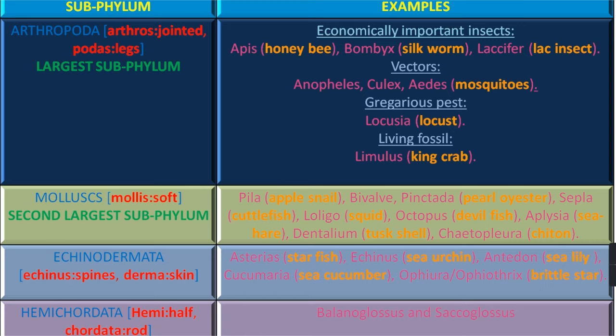Now, Echinodermata — where Echinus means Spines and Derma means Skin, that is these animals have spines on their skin. Examples are Asterias (Starfish), Echinus (Sea Urchin), Antedon as Sea Lily, Cucumaria (Sea Cucumber), and Ophiura or Ophiothrix, which is Brittle Star.